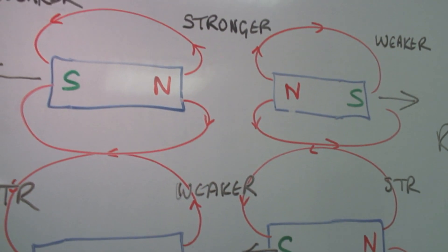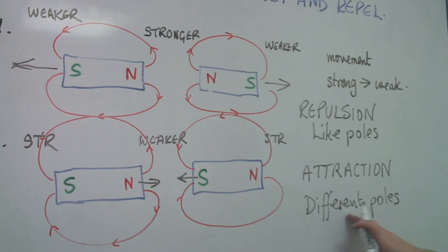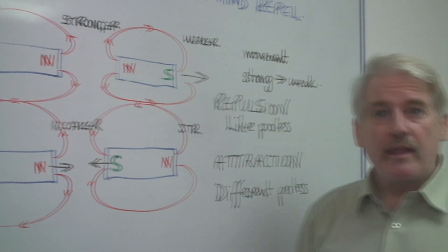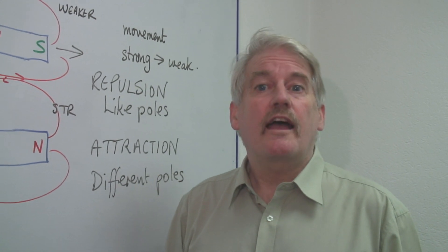So the rule is, like poles repel, unlike poles or different poles attract. So that is simply how magnetic poles attract and repel.